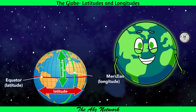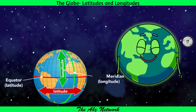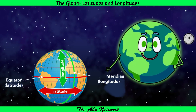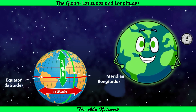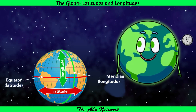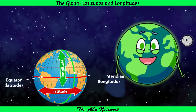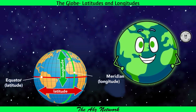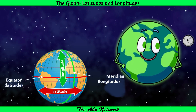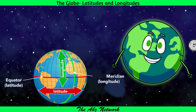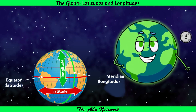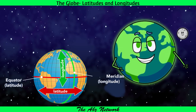Next topic — longitude and time. The longitude of a place helps in calculating the time of that place at a given moment. The longitude passing through Greenwich has been taken as the standard meridian by all the countries of the world. For convenience, the local time of a centrally located city is taken as the standard time for the entire country.